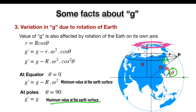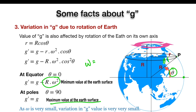Even this maximum reduction in g at the equator is very very small, because the value of omega for the Earth's rotation is very small. So the overall reduction in g is very very small. The derivation of all these variations in the value of g will be covered in another video on the derivation chapter.